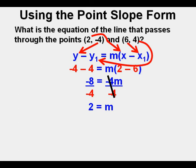So we find that m equals 2, since negative 8 divided by negative 4 is 2. This number, m, is our slope and not our final answer, so we underline it as a preliminary answer.